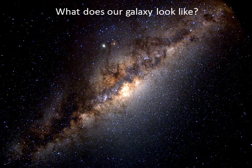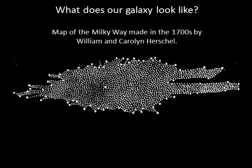It took us humans a long time to learn even these simple facts about the Milky Way's size and shape. It didn't help that the interstellar medium obscures our view of the galaxy, at least in visible light. Early astronomers like the Herschels tried to map the Milky Way by doing star counts. But because interstellar gas and dust blocks the light of so many stars, astronomers got the maps wrong.